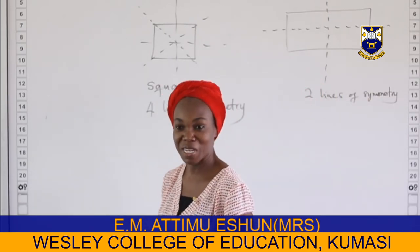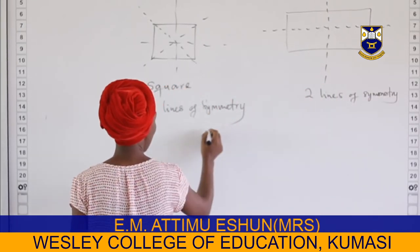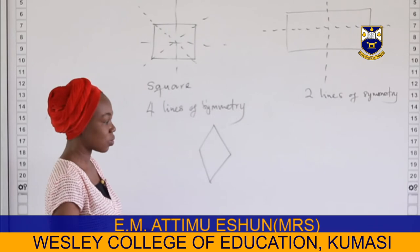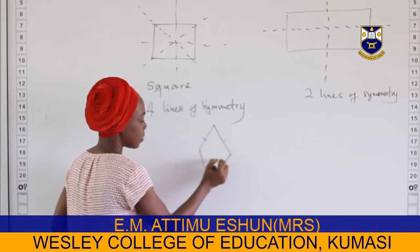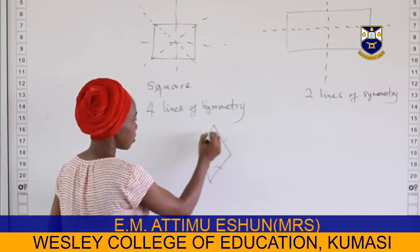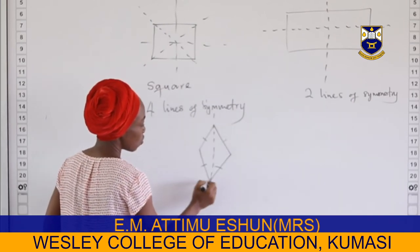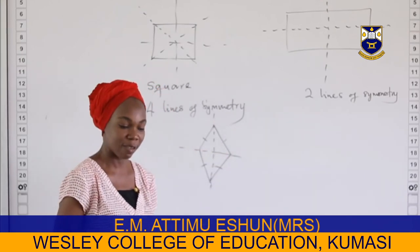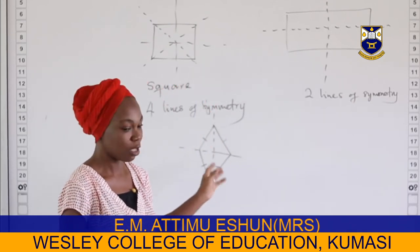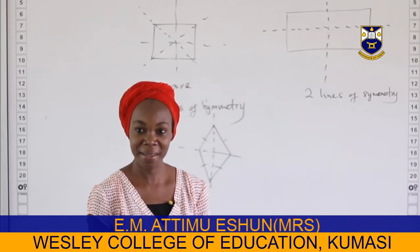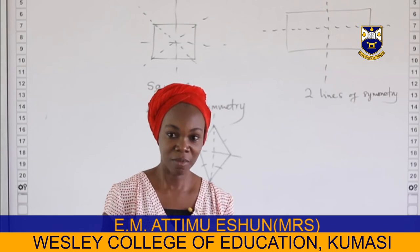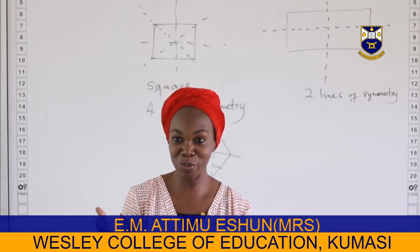My last shape will be a rhombus. For the rhombus, all four sides are equal, so the lines of symmetry are also two: one vertical and one horizontal, passing through opposite vertices of the rhombus. So those are my lines of symmetry for the three plane figures I have named.